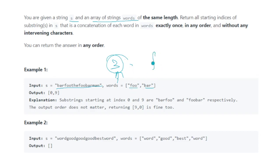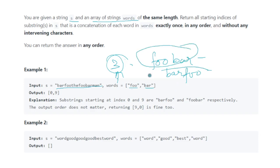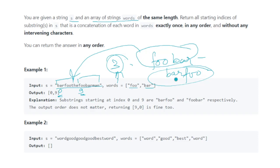We need to concatenate these two words in any order — one combination is 'foobar', the other is 'barfoo'. We search for these substrings in the string. We find 'barfoo' starting at index zero and 'foobar' starting at index nine. So those are the starting indices we need to return. Now what if we have one more word — say 'baz'?